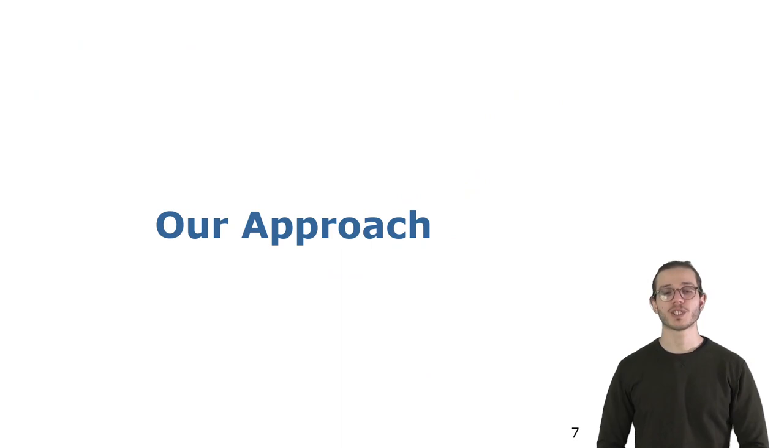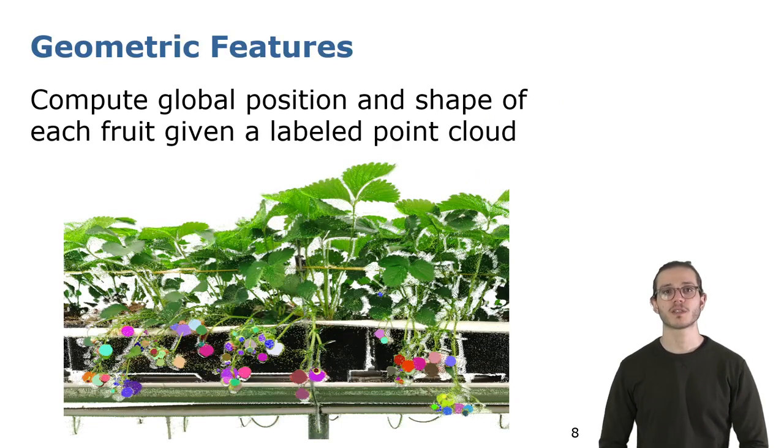The first step of our approach is to extract a geometric feature from our strawberries. We started by manually labeling our point clouds by fitting a sphere for each fruit location to then finally extract their position and radius.